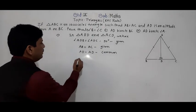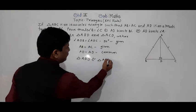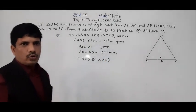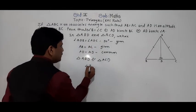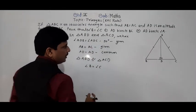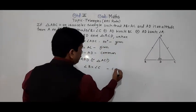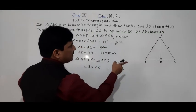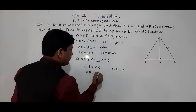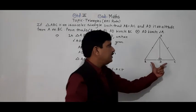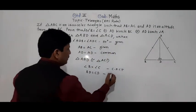So we can say triangle ABD is congruent to triangle ACD. Now we can say angle B is equal to angle C — angle B and angle C are corresponding angles, so by CPCT we can say that. The second thing: AD bisects BC, so BD is equal to CD. BD and CD are corresponding sides of both triangles, so by CPCT.